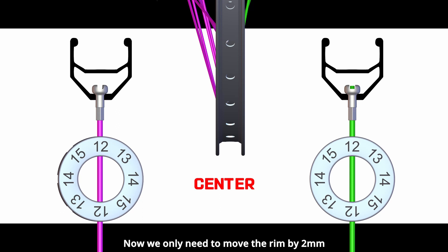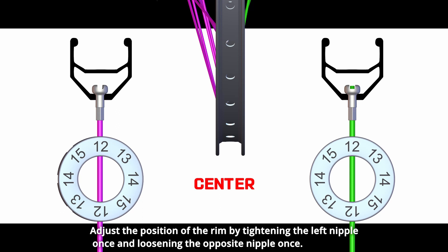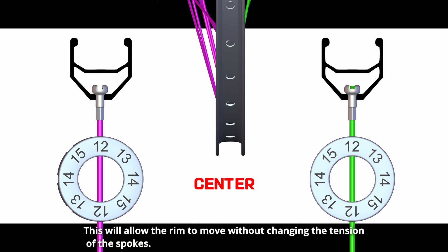Now, we only need to move the rim by 2mm. Adjust the position of the rim by tightening the left nipple once and loosening the opposite nipple once. This will allow the rim to move without changing the tension of the spokes.